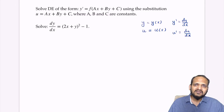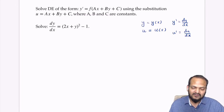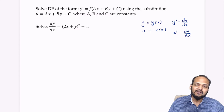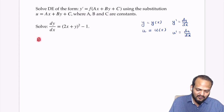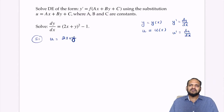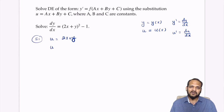Let's see how we solve this differential equation. Step number one is to do the substitution: u is equal to 2x plus y. If I find the derivative with respect to x, I get u prime is equal to 2 plus y prime, which tells me that y prime is equal to u prime minus 2.